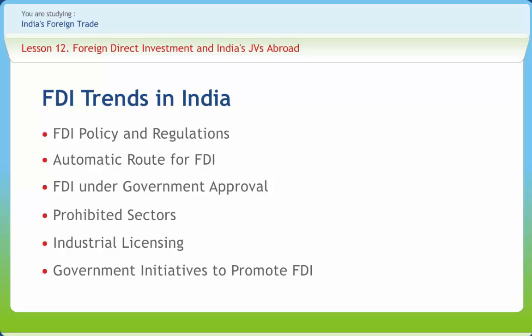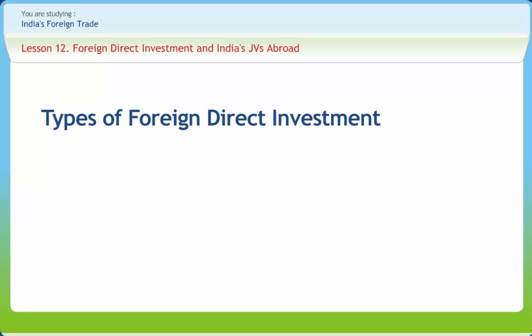In the media industry, businesses such as newspapers and periodicals only allow foreign investors to invest by as much as 26 percent. FDIs can be broadly classified into two types: outward FDIs and inward FDIs. This classification is based on the types of restrictions imposed and the various prerequisites required for these investments.